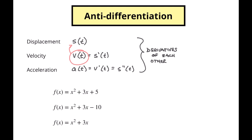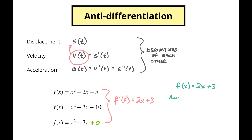Let's take a look at these three functions: x squared plus 3x plus 5, x squared plus 3x minus 10, and just x squared plus 3x — or we could also say x squared plus 3x plus 0. If we looked at the derivative of each one of these, we would see that the derivative of any of these functions is 2x plus 3. So what we want to do is figure out how do we get from this and go back. Let's say we're starting at f of x, so f of x is 2x plus 3, and we want to find the anti-derivative of f of x. We can see that's going to be x squared plus 3x. But then we don't know what we would add to this thing, because it could be plus 5, minus 10, or plus 0.